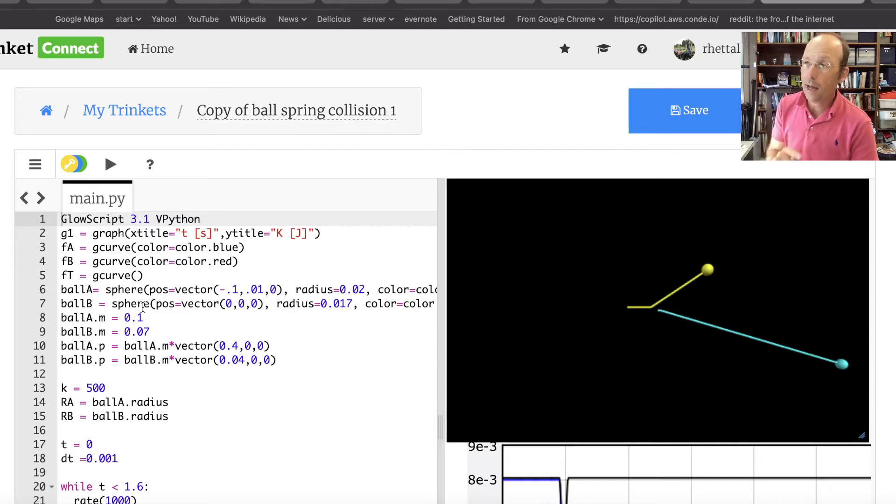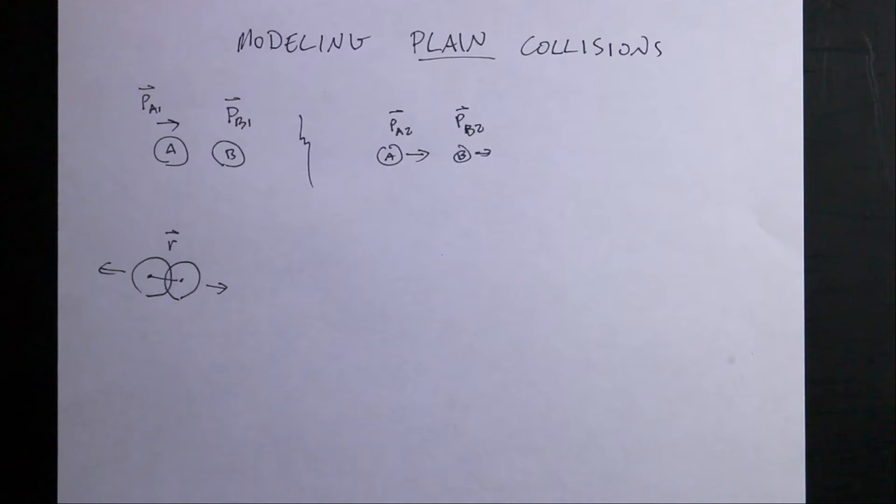Now how do we do just a plain collision? Not one that sticks together, not an inelastic collision, and not an elastic collision, but a normal collision. Remember with a normal collision, momentum is conserved, kinetic energy is not conserved, and they don't stick together.